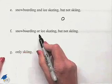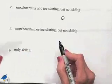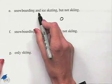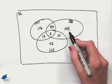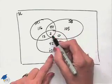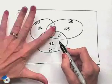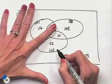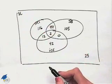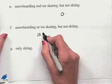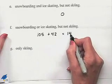How about snowboarding or ice skating but not skiing? That's a little different — we're looking at the union with "or" rather than the intersection with "and." Snowboarding or ice skating means either section, but we do not allow skiing, so we take 105 plus 42, giving us a total of 147.